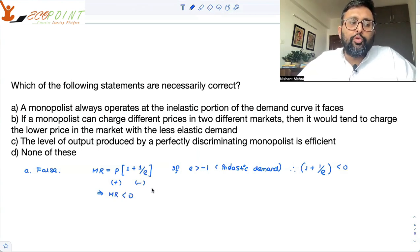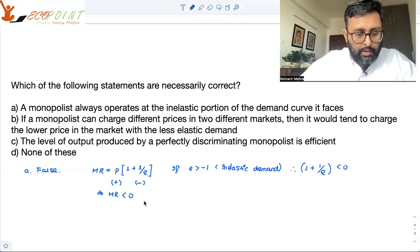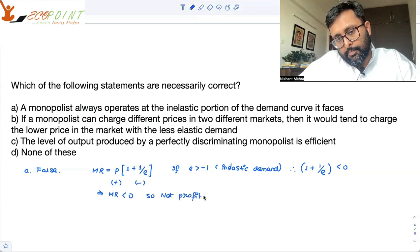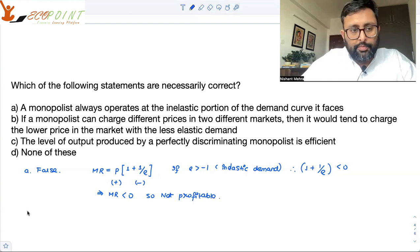It is not profitable for him to produce. MR negative, so it is not profitable for him to produce. The point is, if you are producing more and the additional revenue which you are going to get is coming negative, then it is not profitable for you to produce. Not profitable.